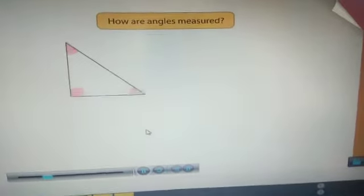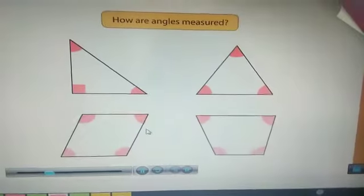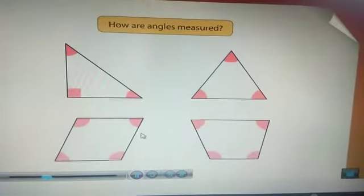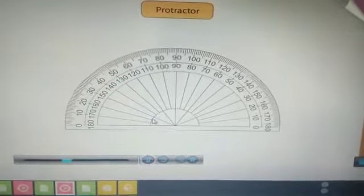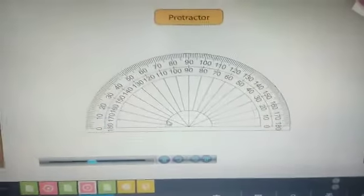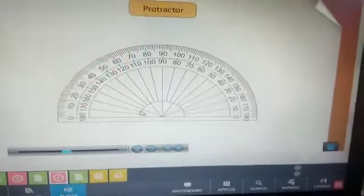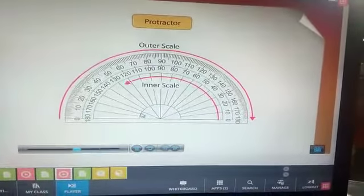Now, how do we measure an angle? An angle is measured with the help of a protractor. The protractor has two scales: one is the inner scale and the other is the outer scale.